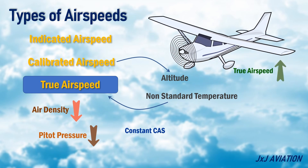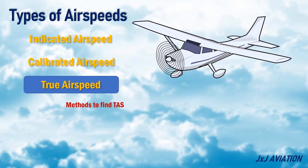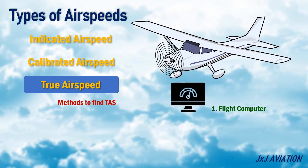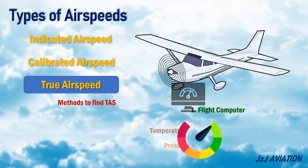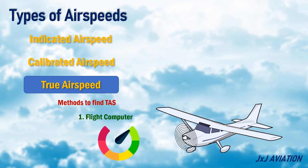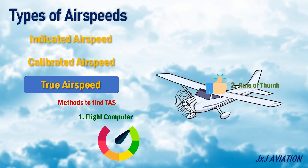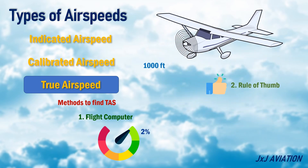There are two methods to find the true airspeed. First method: flight computer. The flight computer corrects the calibrated airspeed for temperature and pressure variations. These values may need to be entered, and the computer will compute the true airspeed. Second method: rule of thumb. This gives an approximate true airspeed value. In this method, for every 1,000 feet of altitude, 2% is to be added to the calibrated airspeed.